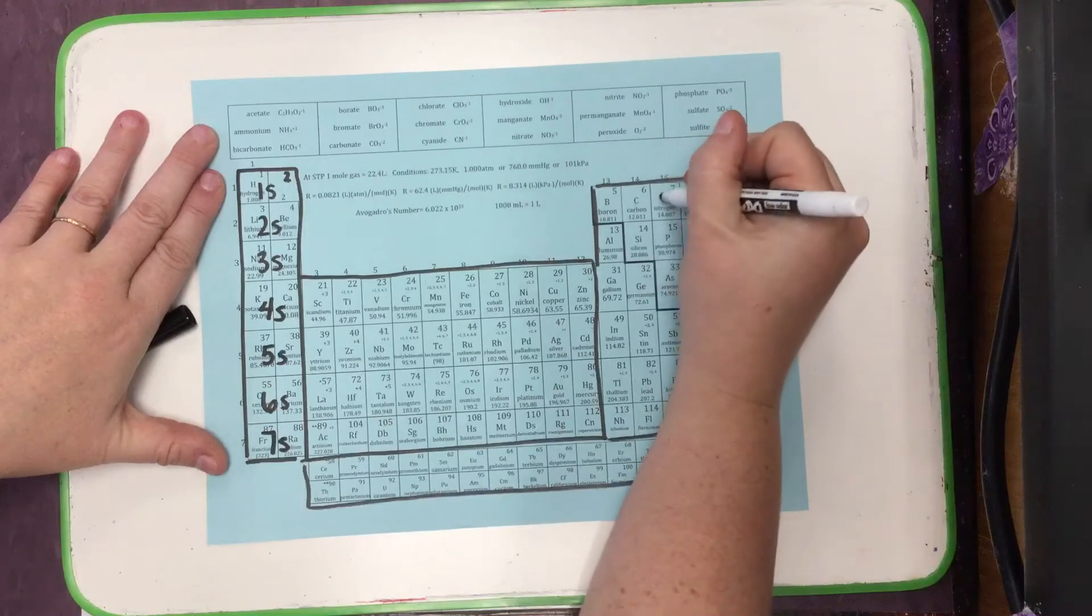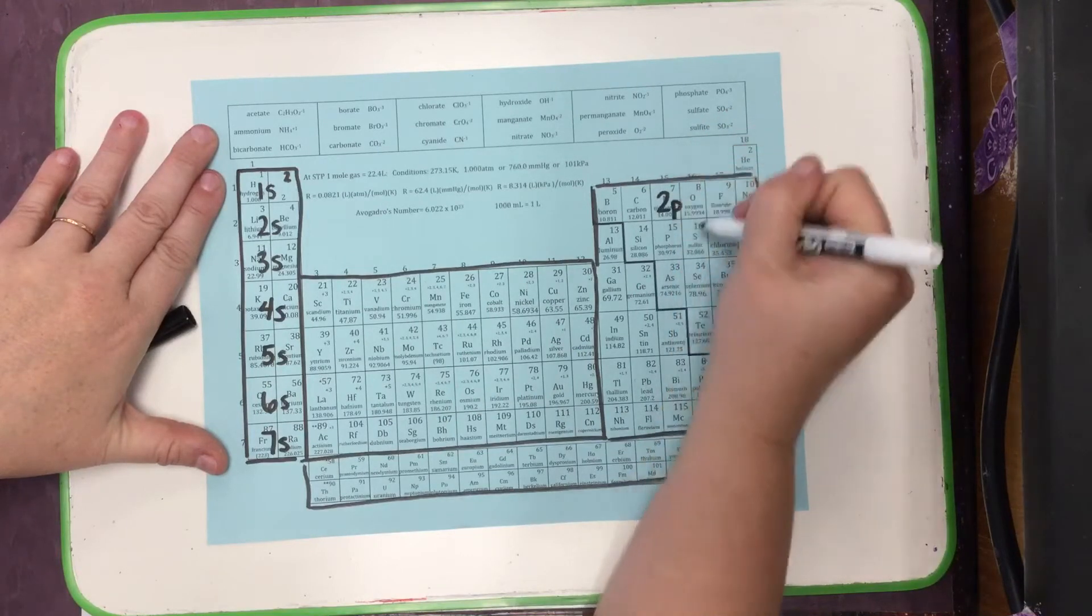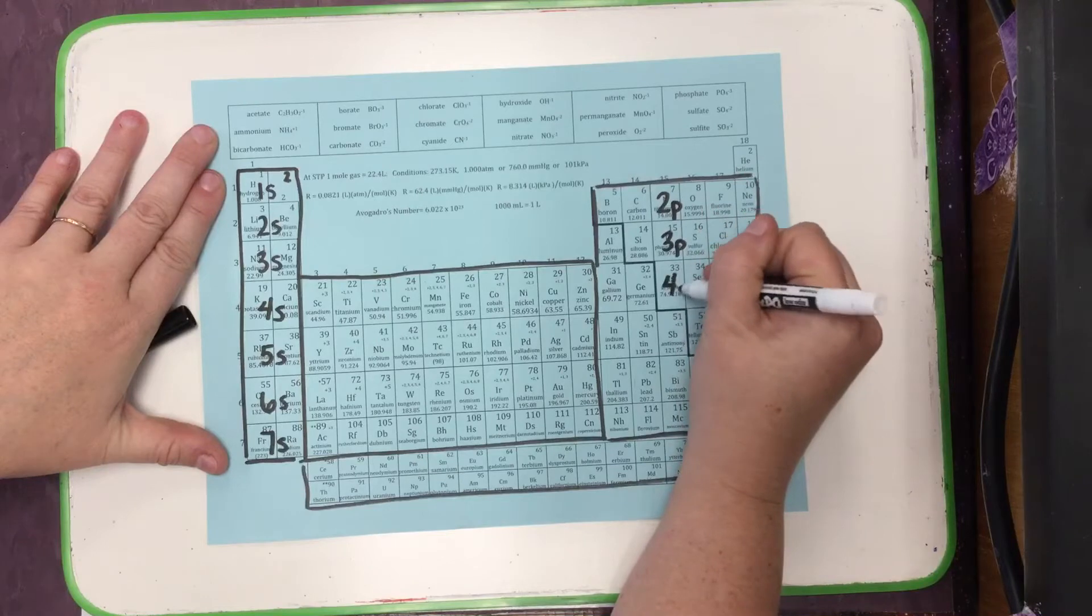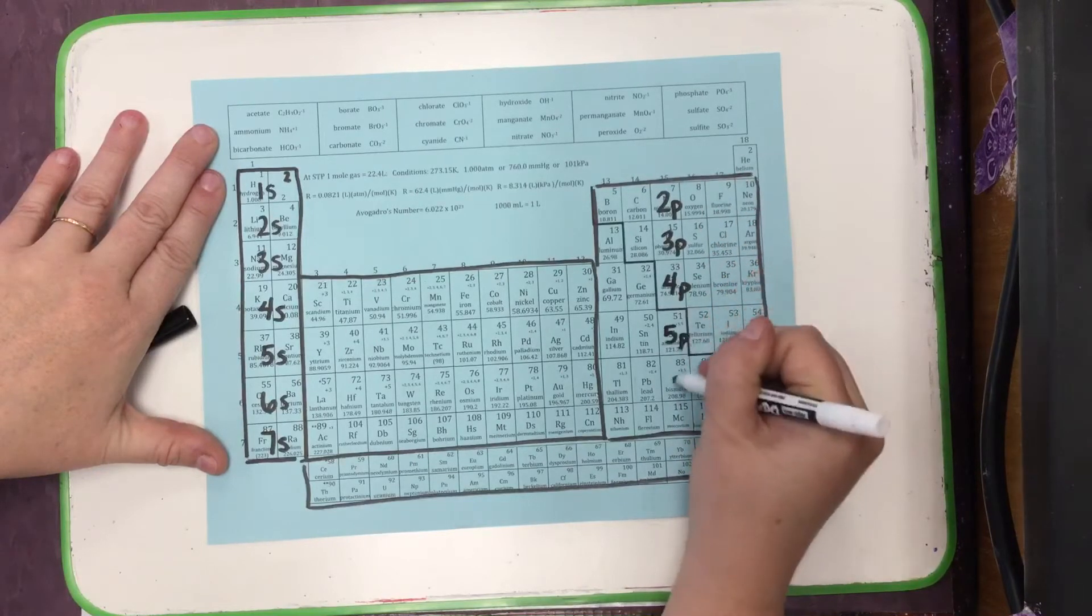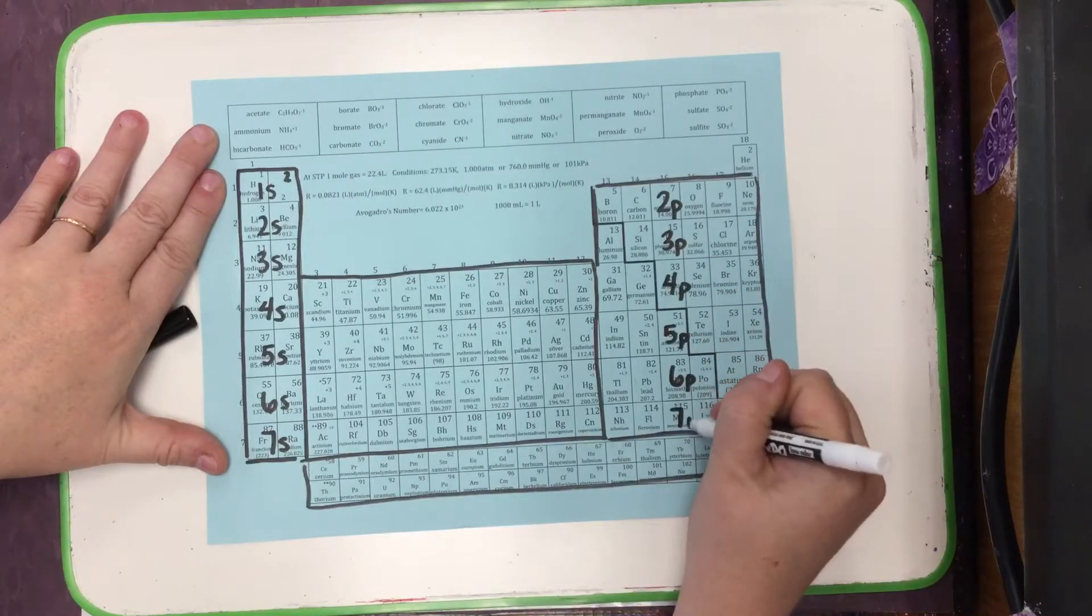We jump to the right side and start with our P, and we start 2P, 3P, 4P, 5P, 6P, and 7P.